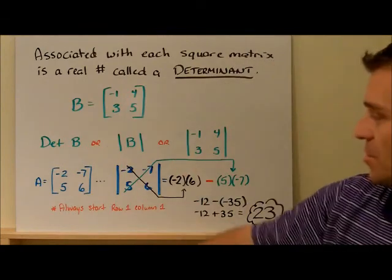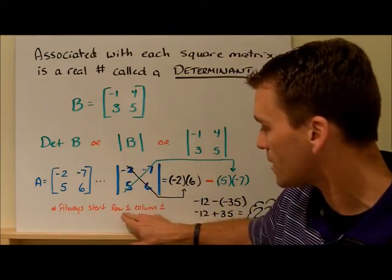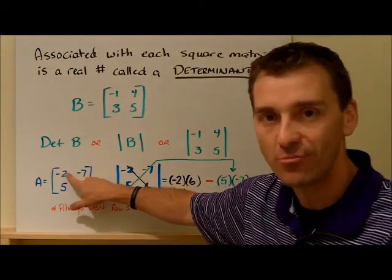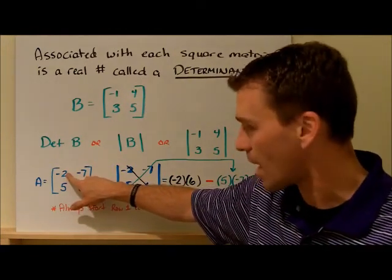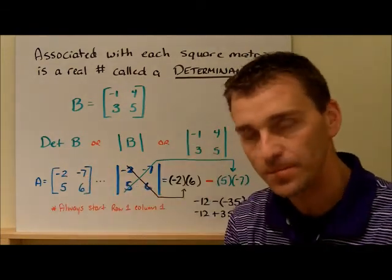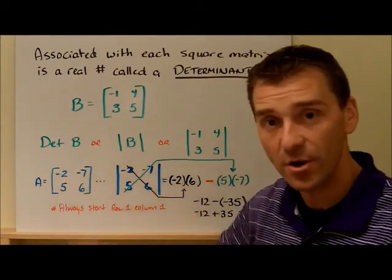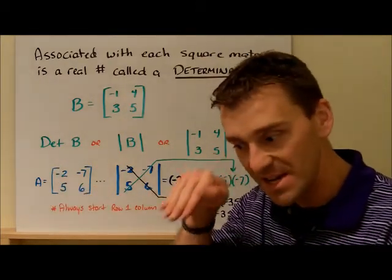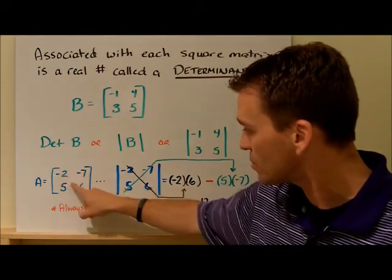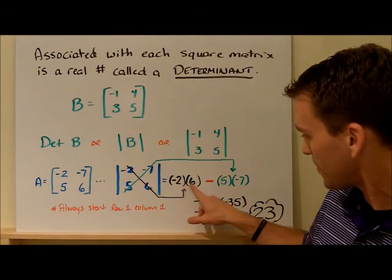Remember, the first thing we do is we always start at row one, column one — the top left corner, that entry spot, row one, column one is where we always start. And we multiply downhill first — that's the easy one, we coast downhill first. So negative two times six gives you this right here.